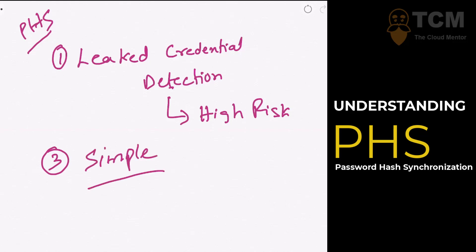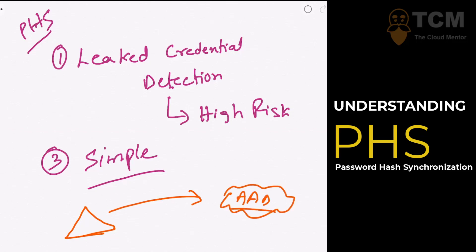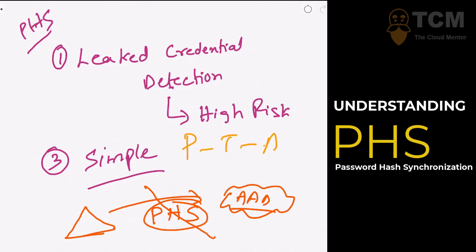The steps to enable password hash sync are simple — install Azure Active Directory Connect and go through the default values, and password hash sync is enabled. However, some environments do not want to sync on-premises accounts to a cloud-based identity system. In that case, instead of PHS, you would use something called PTA — Pass-Through Authentication — which we'll cover in the next section.